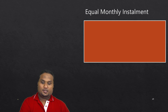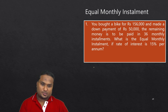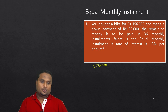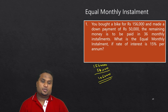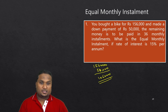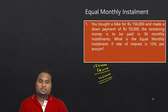Example 1: You bought a bike for ₹1,56,000 and made a down payment of ₹50,000. The remaining ₹1,06,000 is the loan amount. This loan is to be repaid in 36 equal monthly installments. What is the EMI if the rate of interest is 15% per annum?